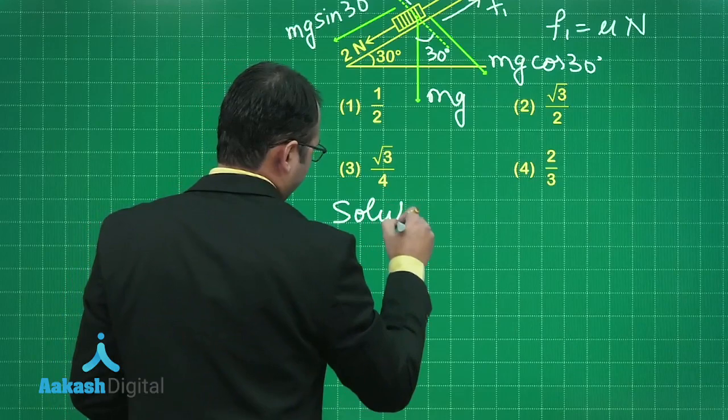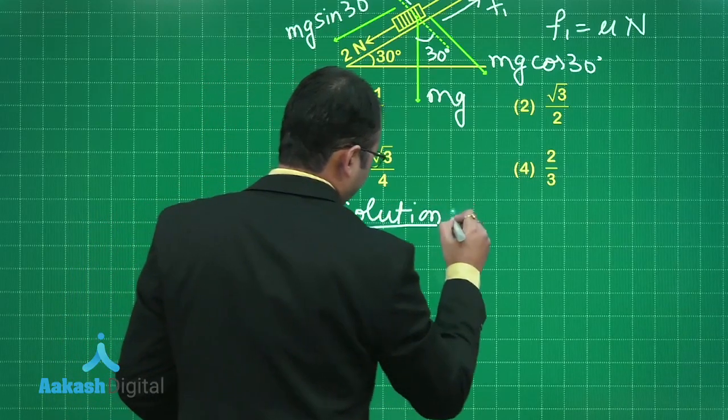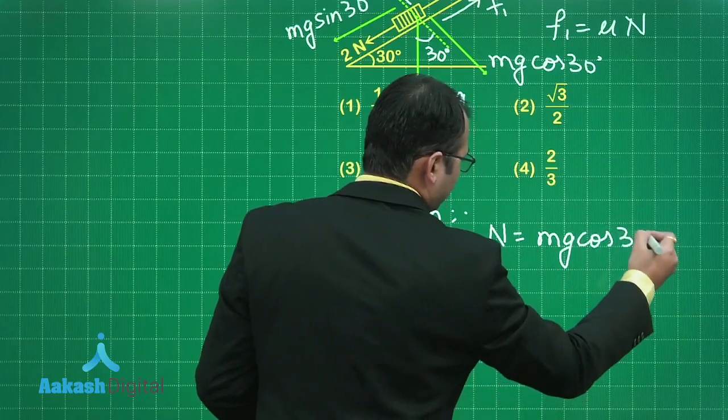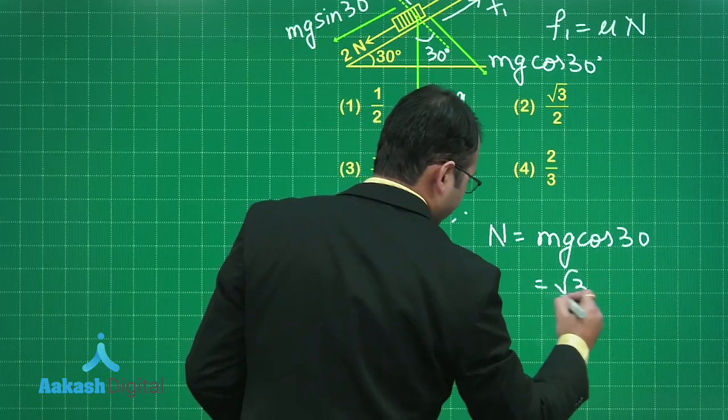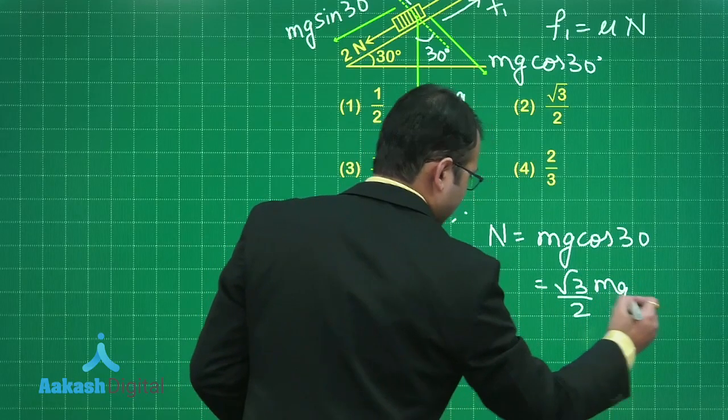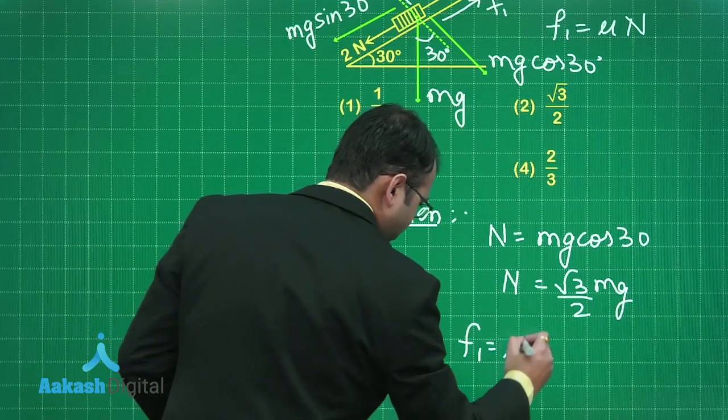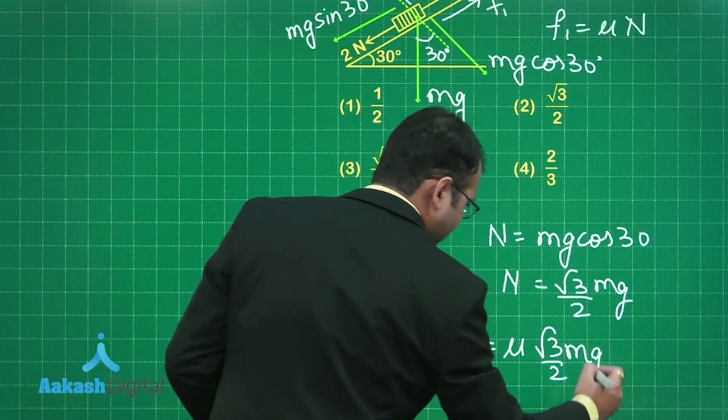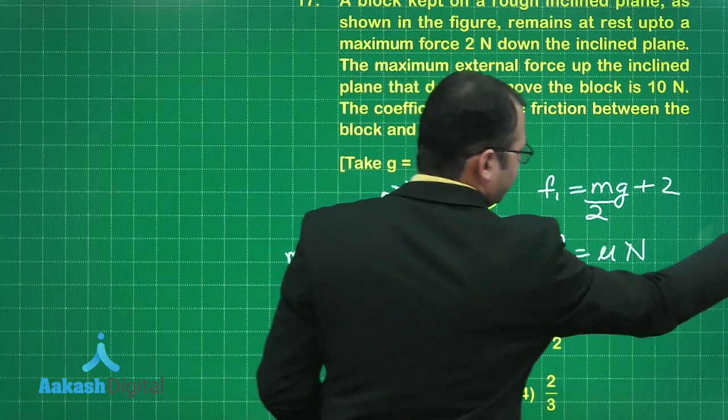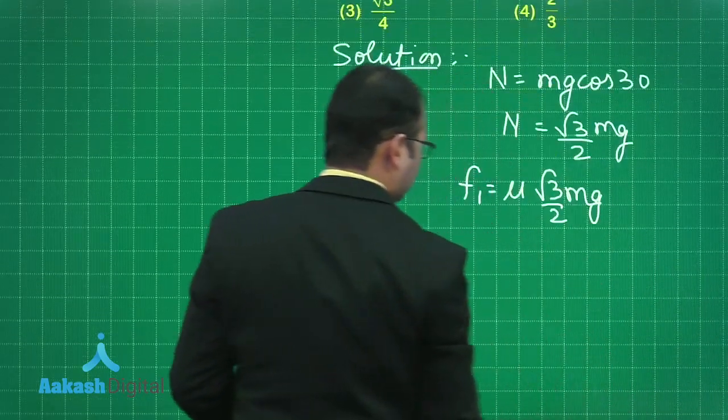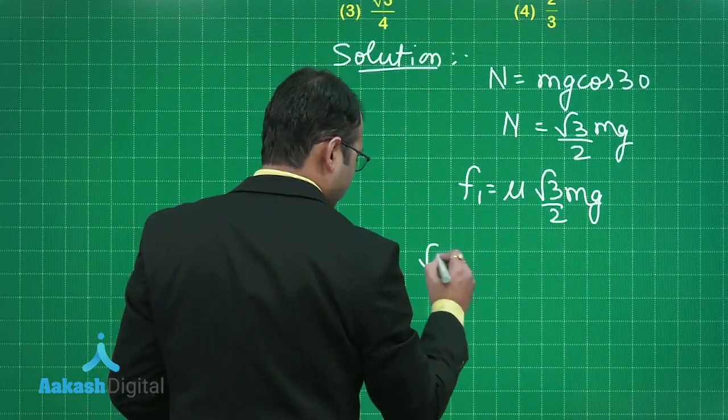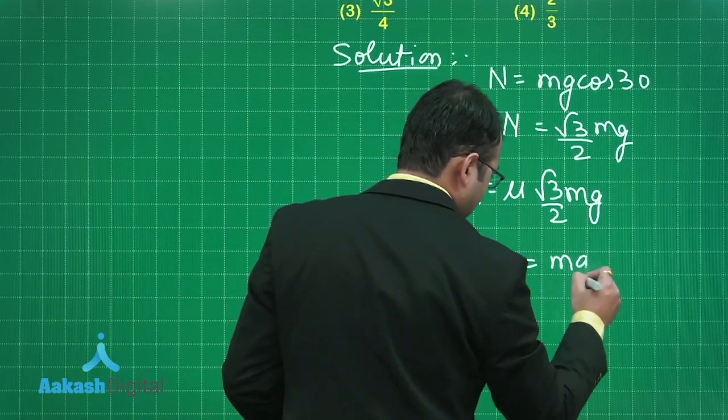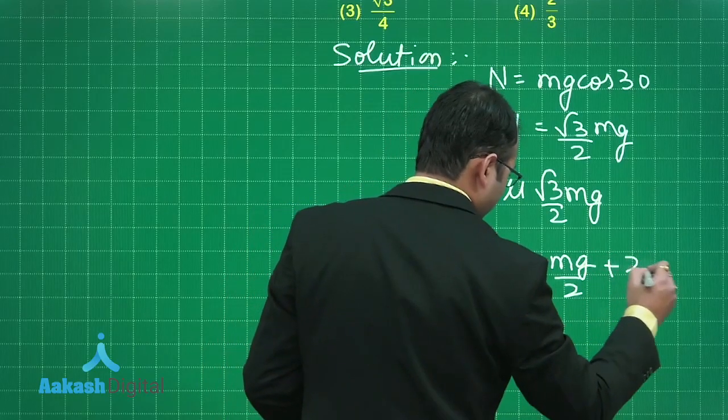In the solution you have N equals to mg cos 30, that would be equal to mg root 3 by 2. So f₁ would be equal to μ times root 3 by 2 mg. In this formula we can put that root 3 by 2 μ mg should be equal to mg by 2 plus 2. Let's take this as equation 1.